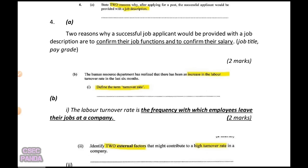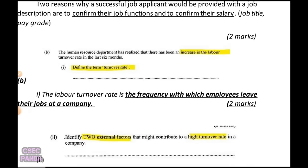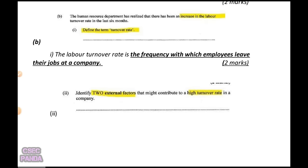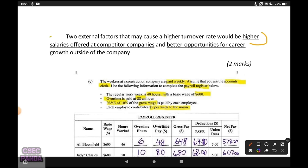Part B of question four: the human resource department has noticed an increase in the labor turnover rate in the last six months. Define the term 'labor turnover rate.' I said the labor turnover rate is the frequency with which employees leave their jobs at a company — basically people quitting and needing to be replaced. They then ask you to identify two external factors that might contribute to a high turnover rate, meaning things from outside the company attracting people away.